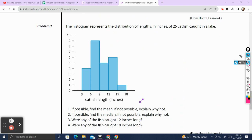Our last question, problem number seven. The histogram represents the distribution in length and inches of 25 catfish caught in the lake. If possible, find the mean. If not possible, explain why not.